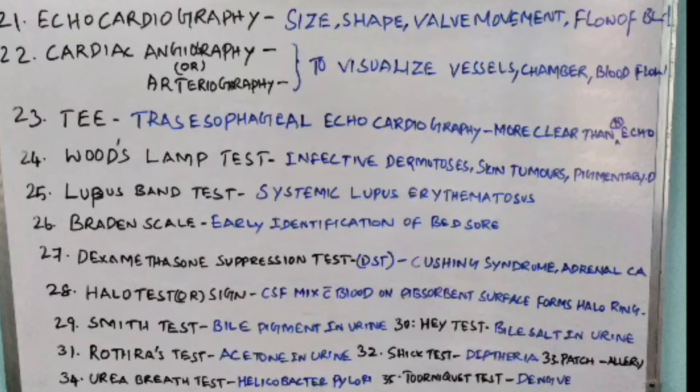Twenty-eighth point: Halo test or Halo sign. It is done to find out CSF — cerebrospinal fluid mixed with blood on an absorption surface, which forms a halo ring.